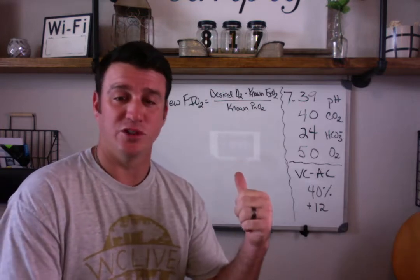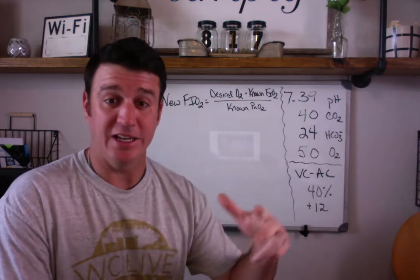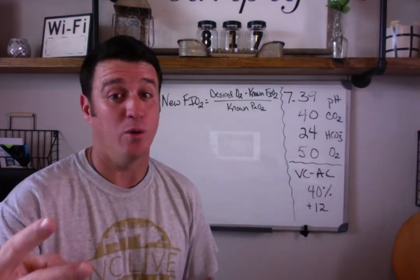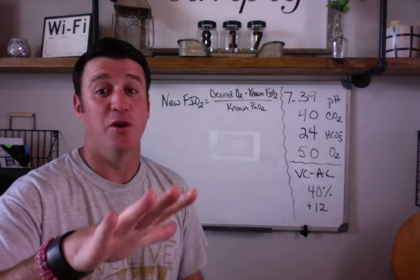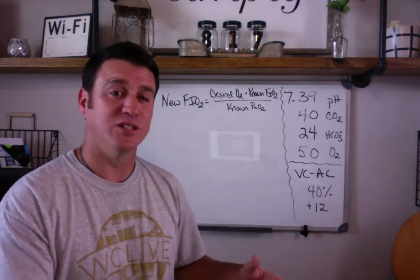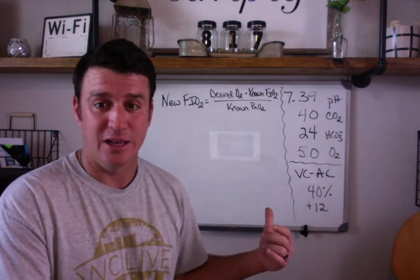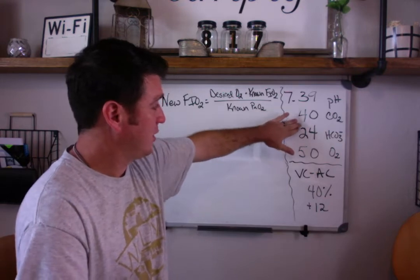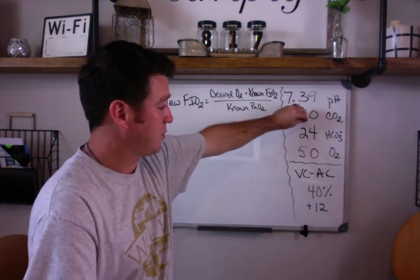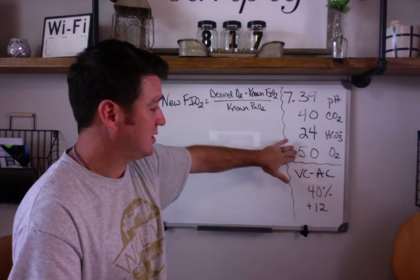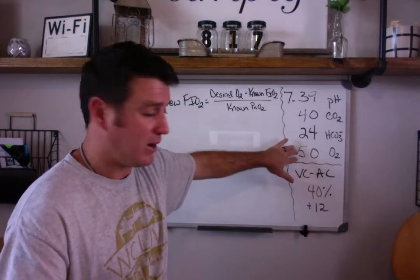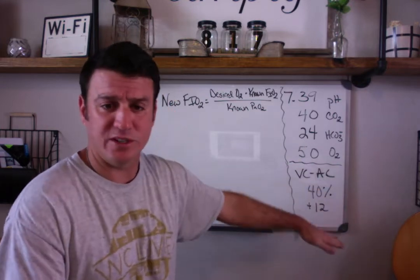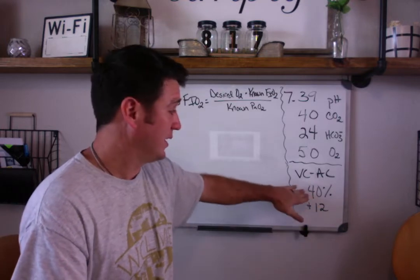The previous video was over making ventilation changes to get our CO2 either up or down by changing respiratory rate or tidal volume using the minute ventilation formula. This one is an oxygenation problem. We look at our blood gas over here: CO2 of 40 and a normal bicarb giving us a normal pH. No ventilation problem. Do we have an oxygenation problem? Absolutely. We're sitting at moderate level of hypoxemia right now on VCAC.